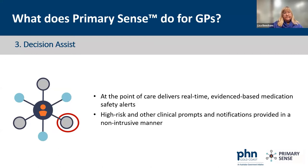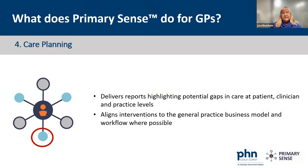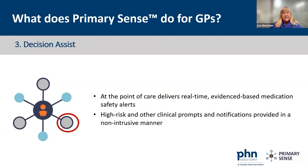Primary Sense is also a decision assist tool. It delivers information to the GP by prompts at the point of care — real-time, evidence-based medication safety alerts and other important clinical prompts and notifications in a non-intrusive manner. It's usually on the right-hand side of the screen; you can minimize it, and if a prompt has timed out you can go back and retrieve it later.